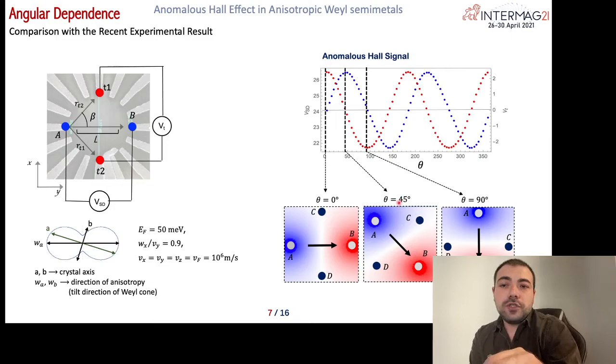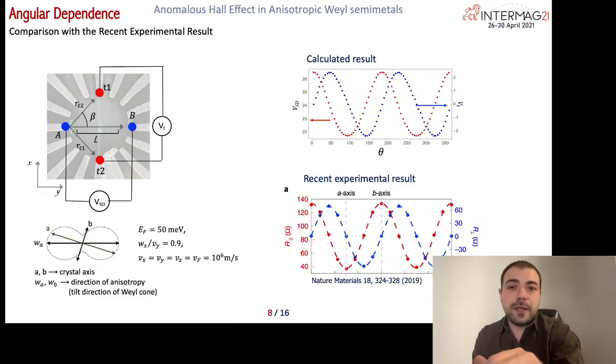This shows the Hall voltage against the full angle space. The blue one is the longitudinal and the red one is the transverse voltage differences. And I can say that this calculated angular dependence of the Hall voltage is perfectly in agreement with the experimental result recently published from this figure, you can see that.